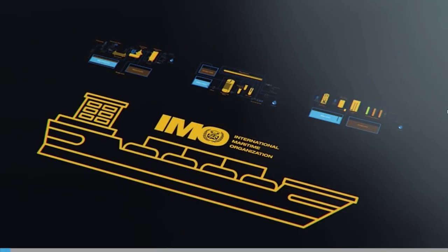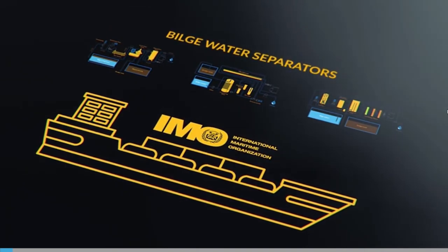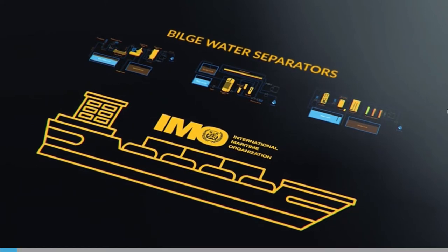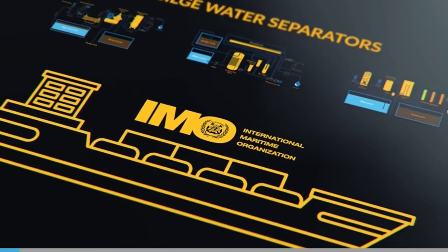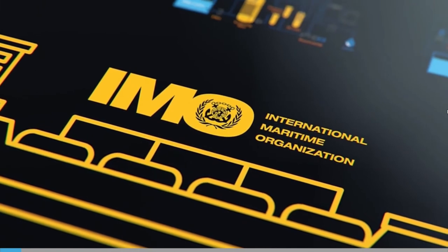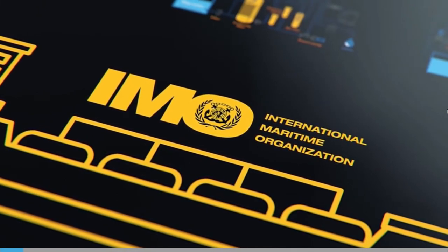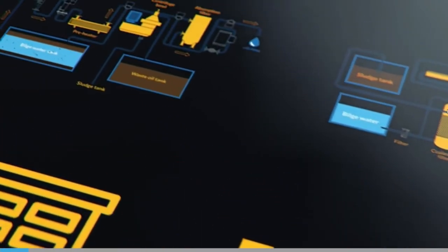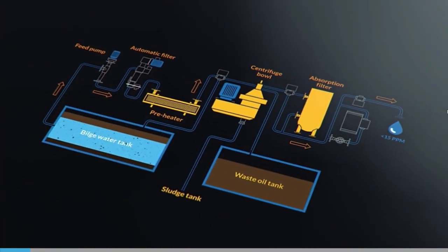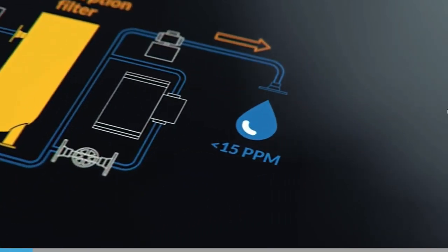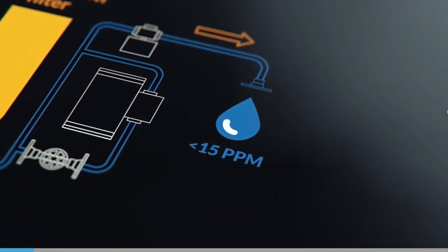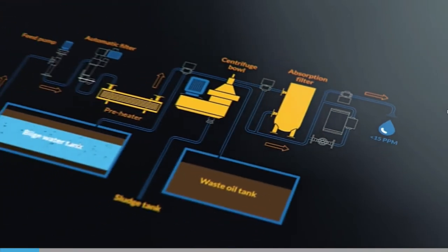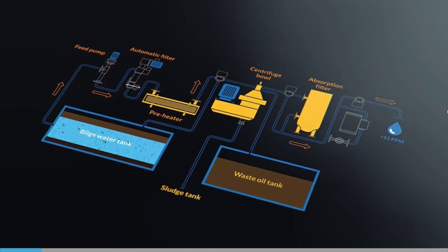In order to be approved for use on board ships, bilge water separators have to meet tight standards. These are set out in guidelines from the IMO and in type approvals from classification societies and regulatory bodies. These say that bilge separators should be capable of producing an effluent for discharge to the sea containing not more than 15 ppm of oil, irrespective of the oil content of the feed supplied to it, and that it must be capable of handling emulsions.